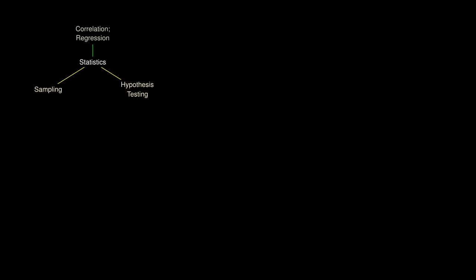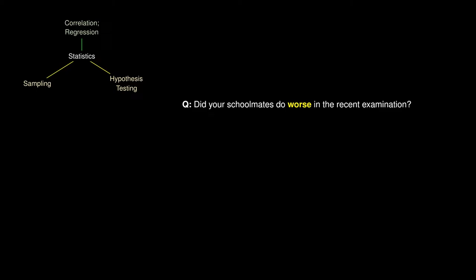We'll ask a simple question: Did your schoolmates do worse in the recent examination? You've always known that they've scored around 70 marks, but when they left the exam hall, everybody felt dejected. You propose an alternate hypothesis that the average has decreased, less than 70. How do you go about checking whether this claim holds up or not?